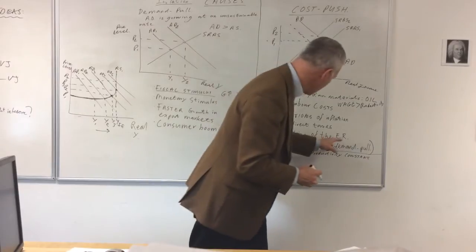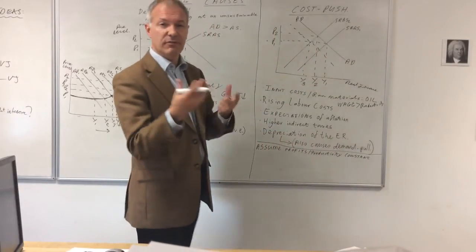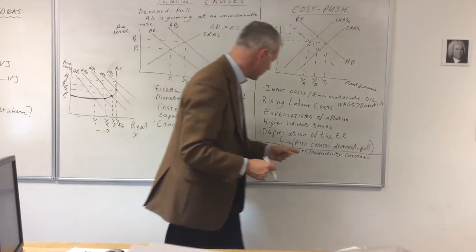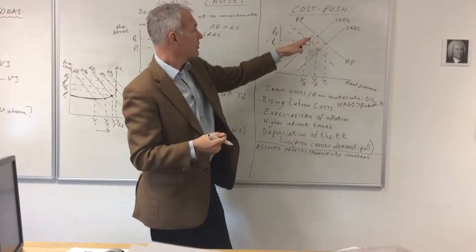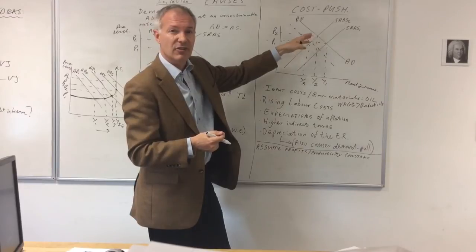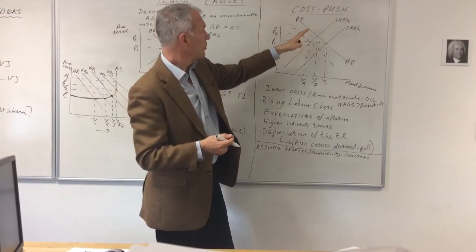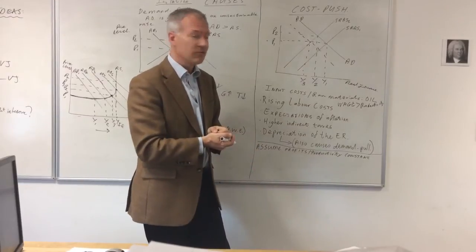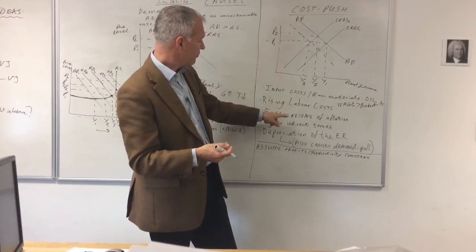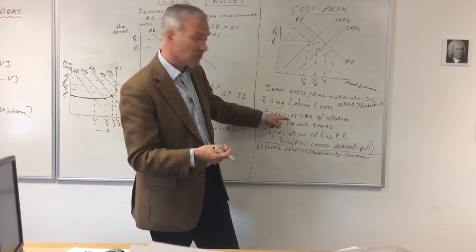The last point is depreciation of the exchange rate. If the pound depreciates, what happens is imports become more expensive. Therefore, the short-run aggregate supply curve shifts to the left. That causes cost-push inflation because the imports are becoming more expensive. Of course, it might lead to second round effects based on inflationary expectations.